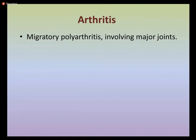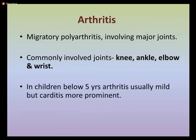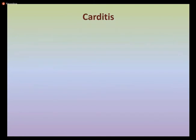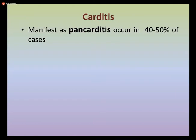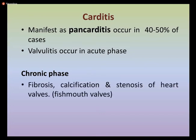In arthritis, the type is migratory polyarthritis involving major joints — most commonly knee, ankle, elbow, and wrist. In children below five years, carditis is more prominent than arthritis. Arthritis does not progress to chronic disease in most patients. Carditis usually manifests as pancarditis with all layers involved in 40 to 50 percent of cases. Carditis is the only manifestation of rheumatic fever that leaves sequelae and causes permanent heart damage. In the chronic phase, fibrosis, calcification, and stenosis cause deformation resembling fish-mouth valves.